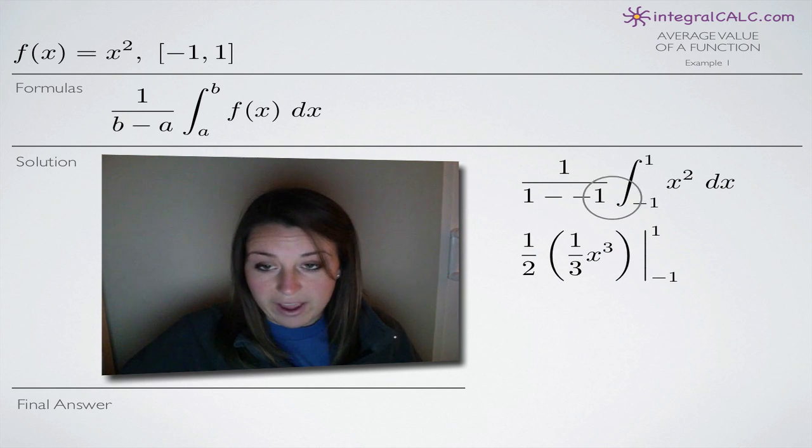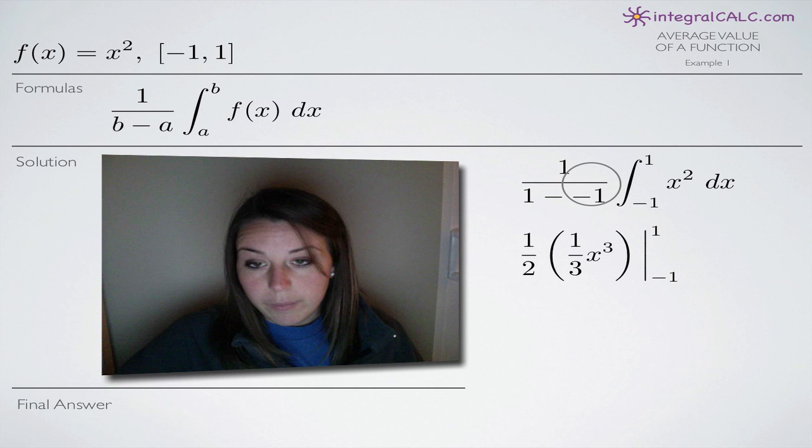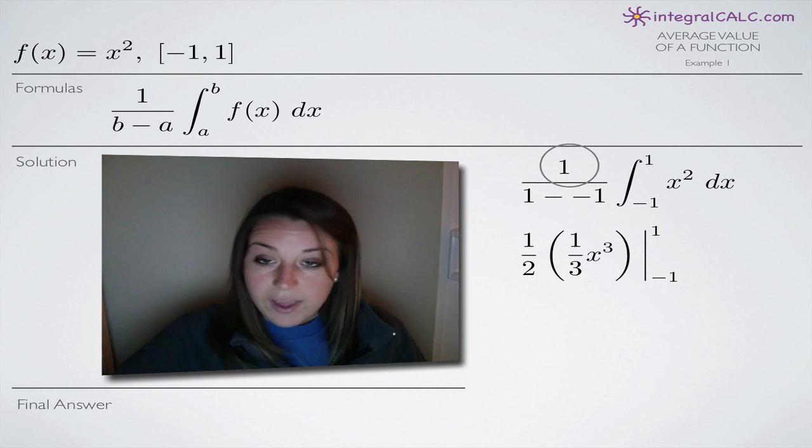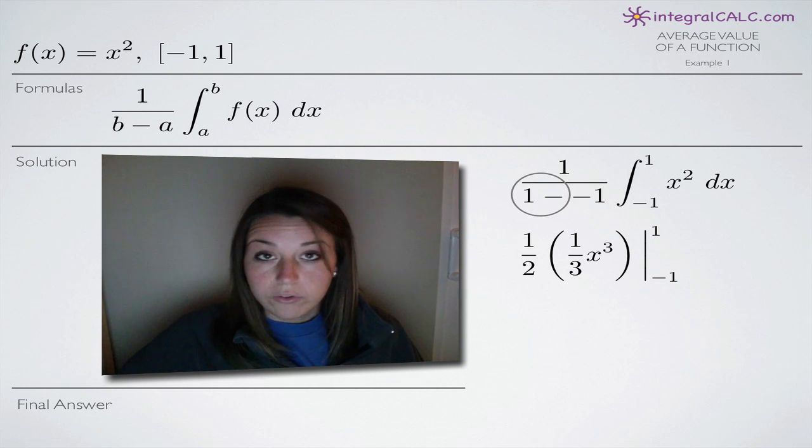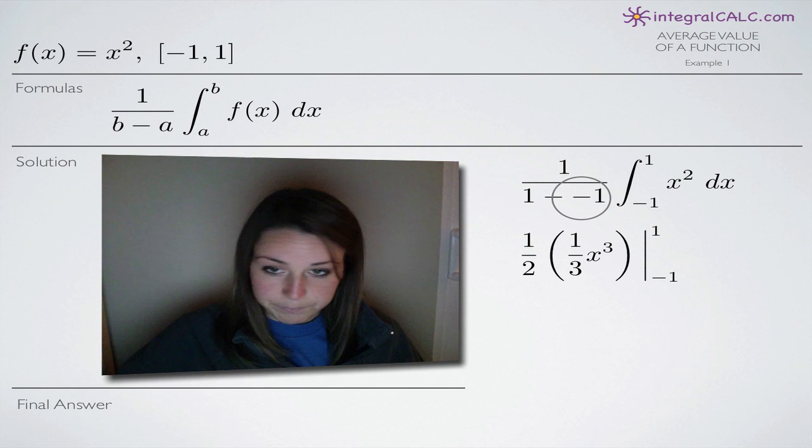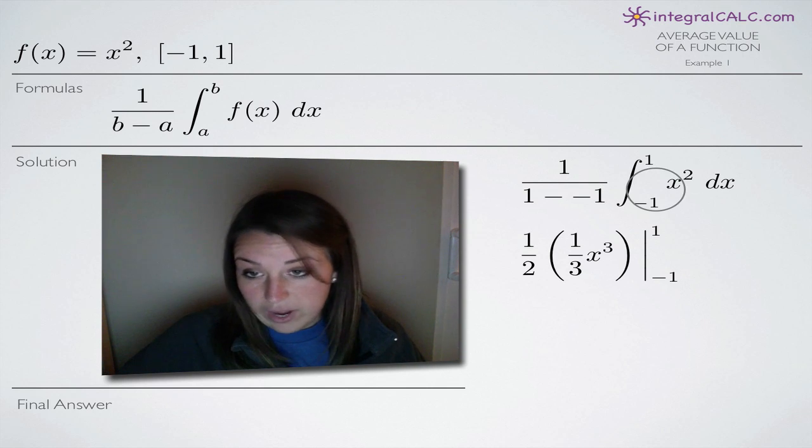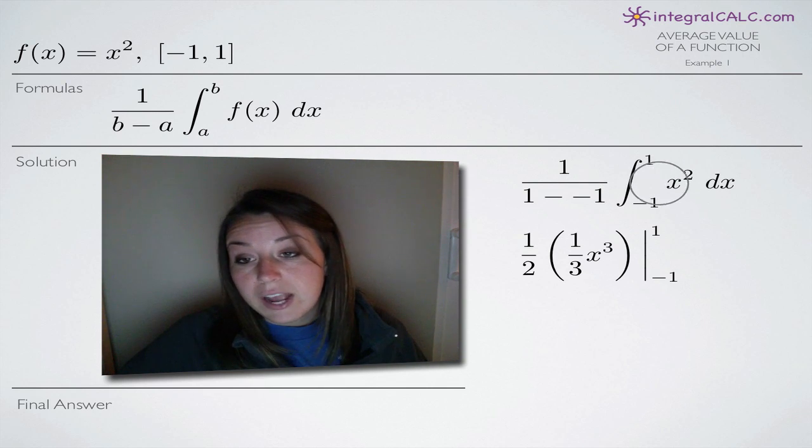So when we simplify that, we get a couple of things here. First of all, we end up with 1 over 2 because we have 1 minus a negative 1. So we have that 1 half in front and then integrating x squared,